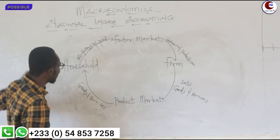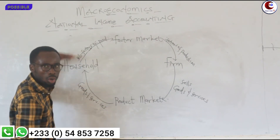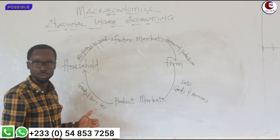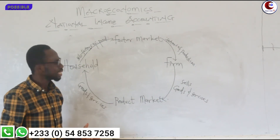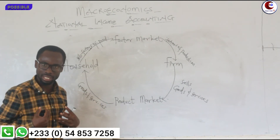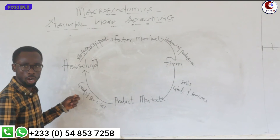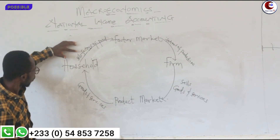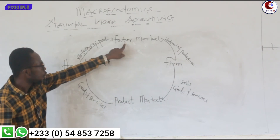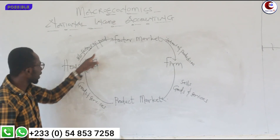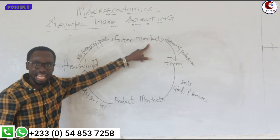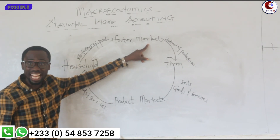Now, when you see that it moves on and on — you give me, I give you; you take from me, I take from you — that is how the circular flow is. This is one phase of the circular flow. The second phase is the reward they get. So household sells factors of production on the factor market. When they sell the factors of production on the factor market, they are going to get what is called factor income.